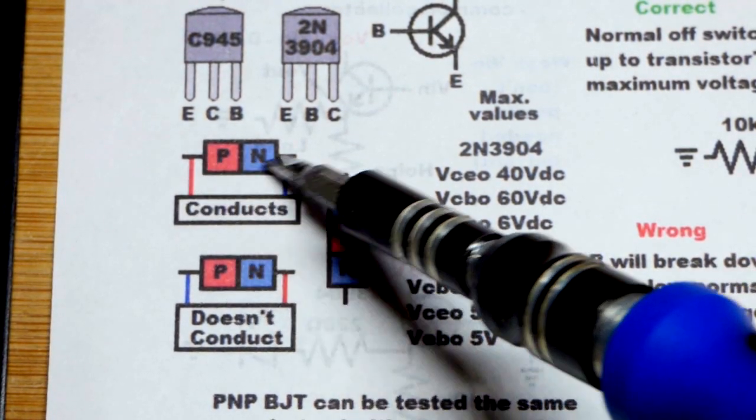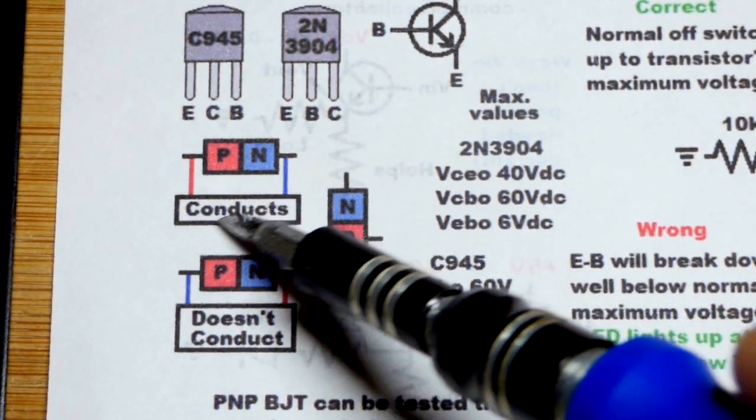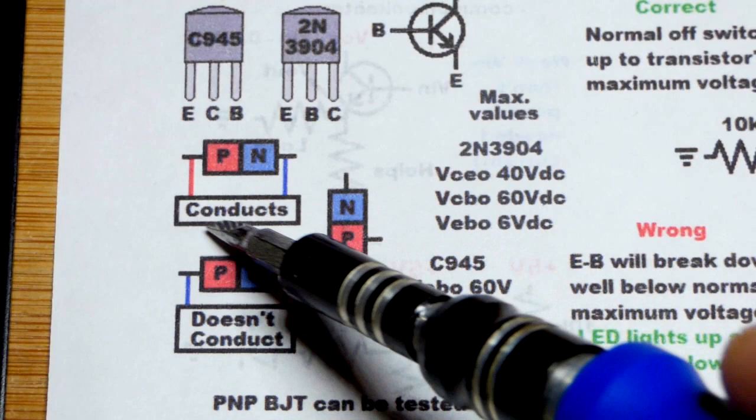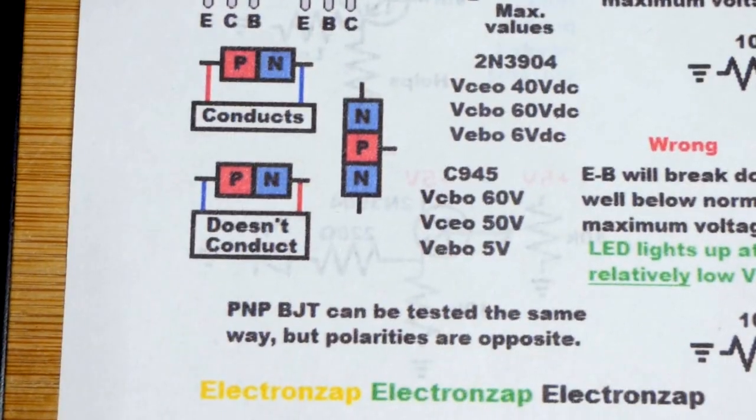So you have to limit current. We're going to use a multimeter that automatically limits current. I think it just puts one milliamp of current through it. But it will know that we have it forward biased and that current is flowing right there.